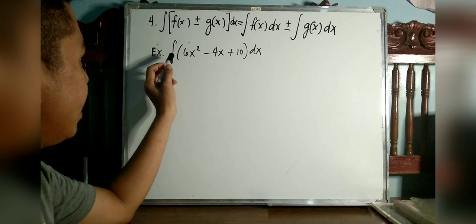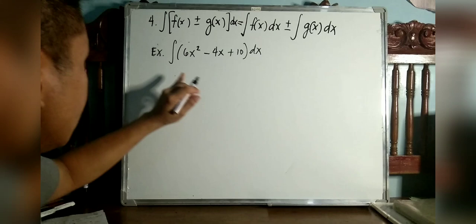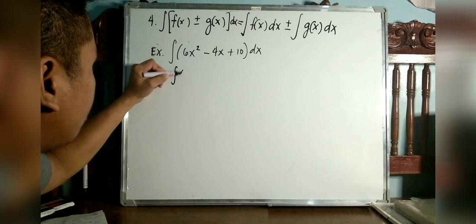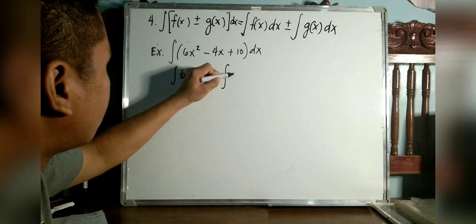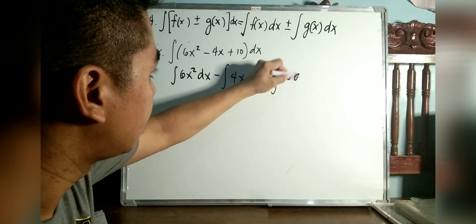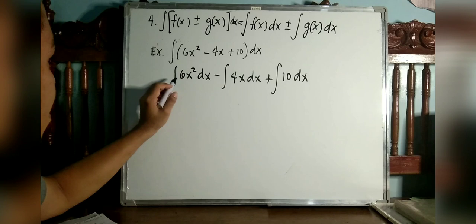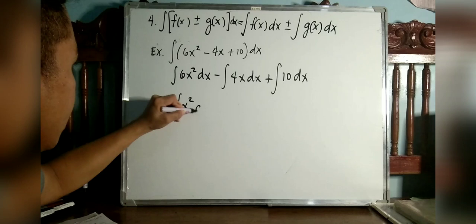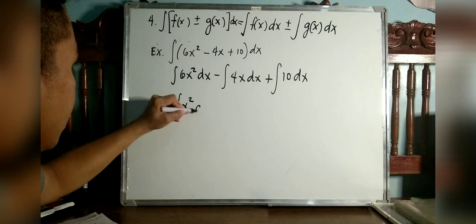For the last example with this rule: the integral of 6x squared minus 4x plus 10 dx. Just integrate each term separately. Distributing the integral sign and dx: integral of 6x squared dx, minus integral of 4x dx, plus integral of 10 dx. Factor out the constants: 6 times integral of x squared dx, minus 4 times integral of x dx, plus 10 times integral of dx.